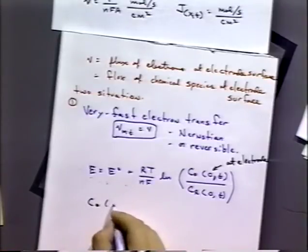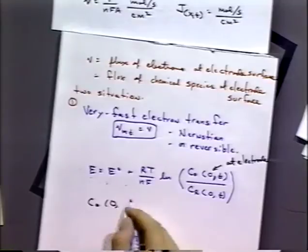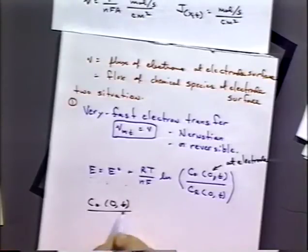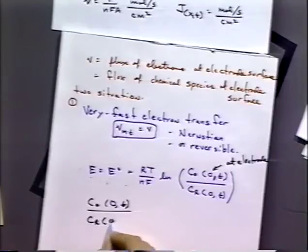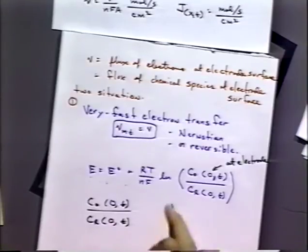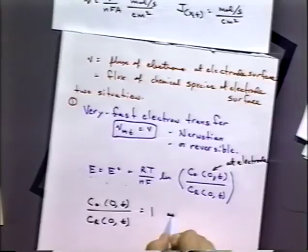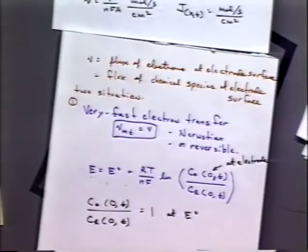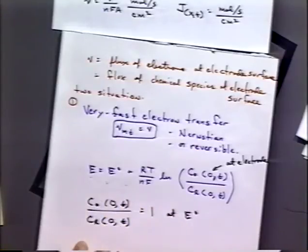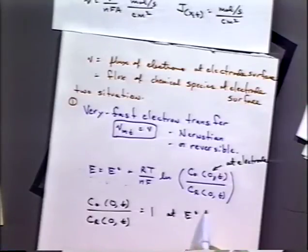Just to remind you: the concentration of O at the electrode surface at any time, divided by the concentration of species R at the electrode surface, is going to be equal to 1 at E0. E0 is a special potential called the formal potential — that's where this ratio equals 1. So when that ratio equals 1, we are at the E0 point.